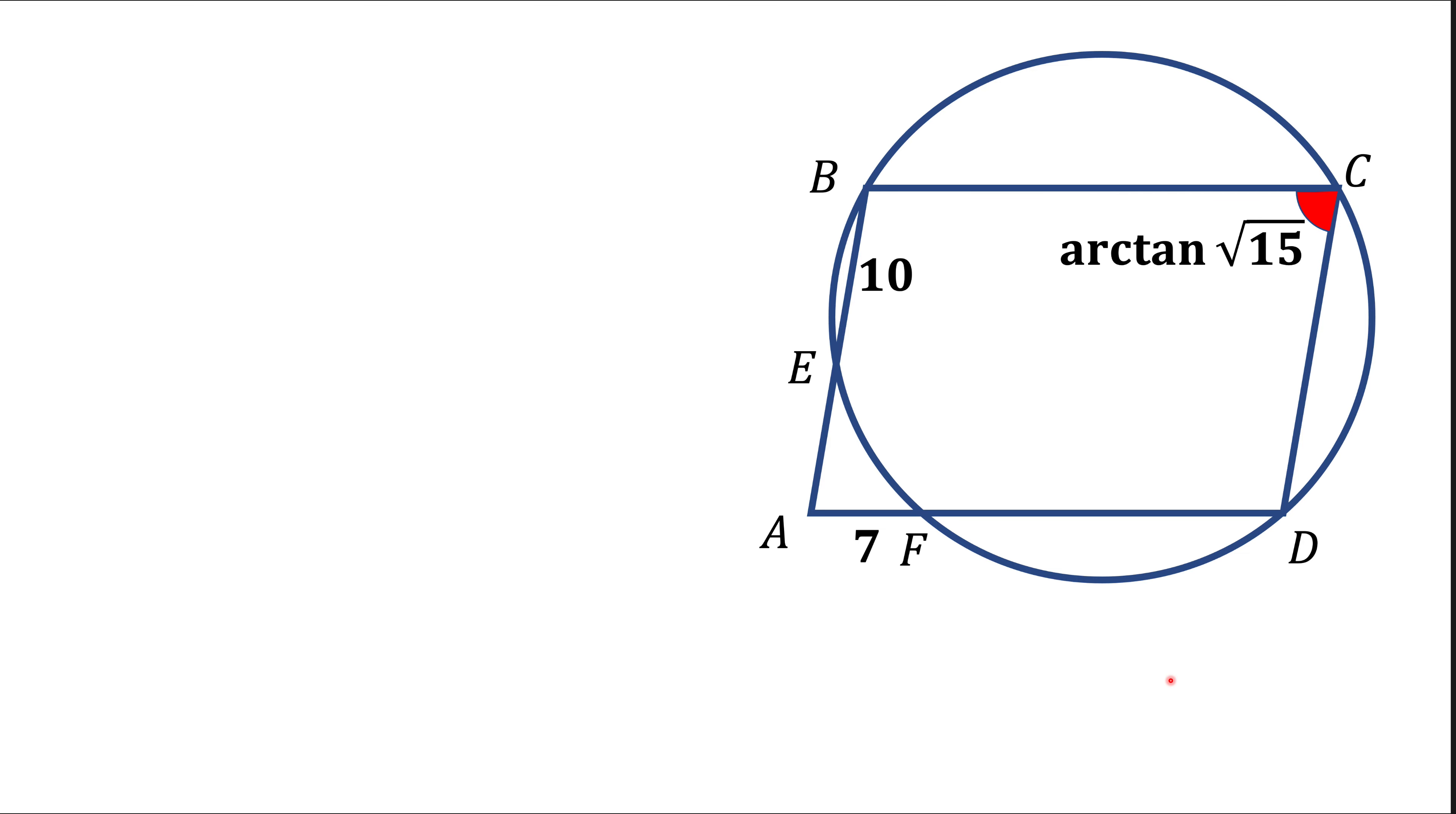Here we have a parallelogram ABCD and a circle that goes through the vertices B, C, and D and intersects side AB at point E and side AD at point F. We know the lengths of AF, which is 7, we know BE, which is 10, and we know angle C, which is arctangent of square root of 15. We are asked to find the area of the parallelogram and the radius of the circle.